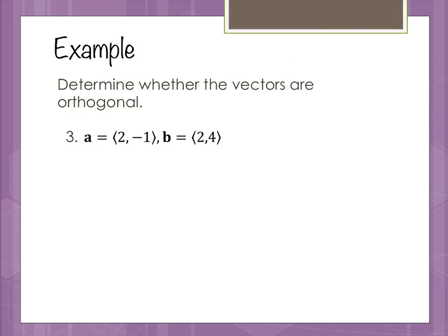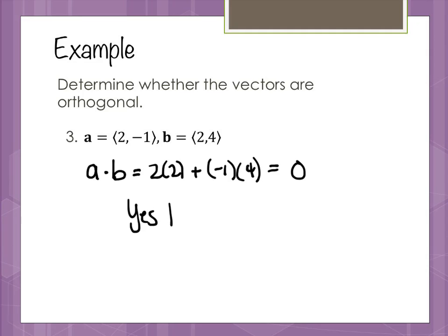We're going to decide if a set of vectors is orthogonal. In order to decide that, we just look at the dot product. With these two-component vectors, we take 2 times 2 plus negative 1 times 4. Adding those together we get zero, so they are orthogonal — yes. And if it hadn't been zero, the answer would be no, they're not orthogonal.